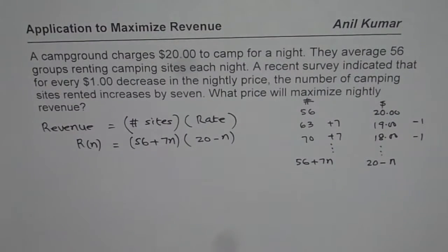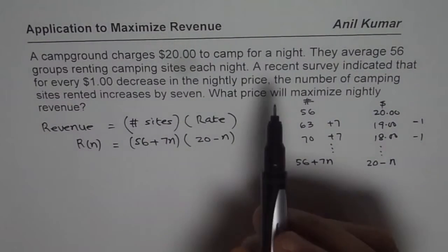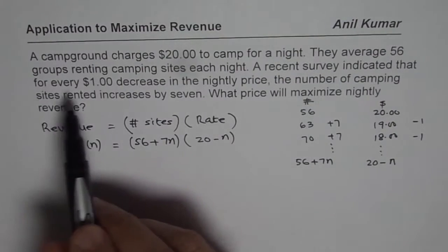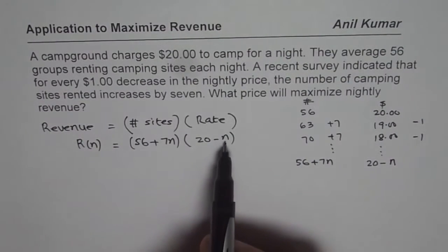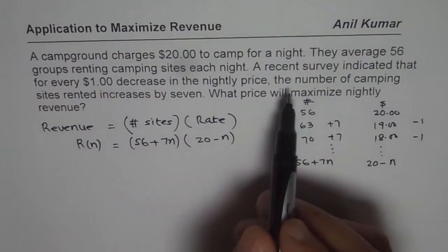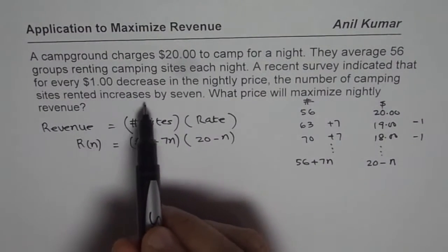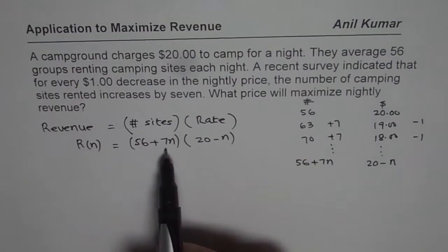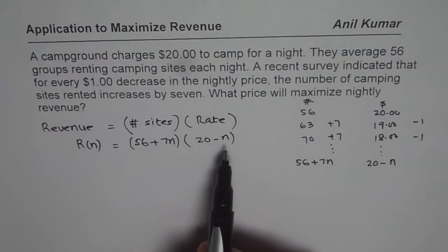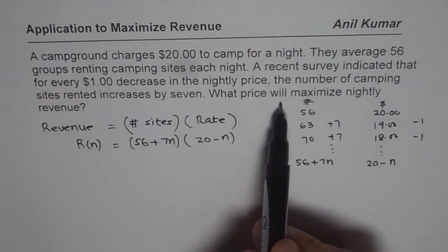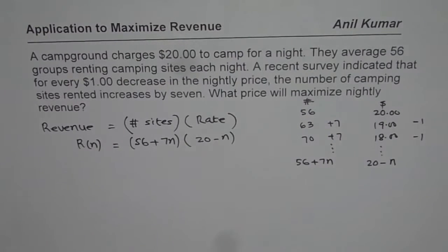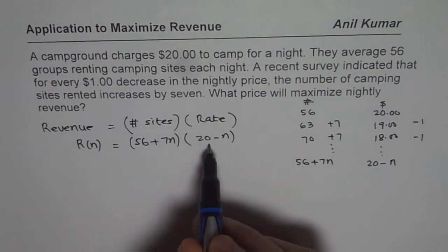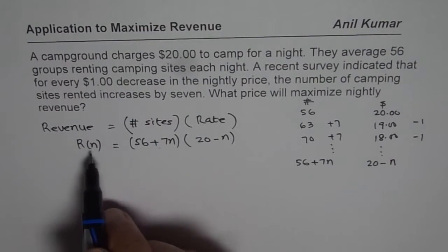So that is what you get as a relation. A recent survey indicated that for every dollar decrease in price, n dollars decrease results in the number of camping sites rented increasing by 7n. So the revenue function can be written as (56 + 7n)(20 − n). Now, to maximize this function, these two factors give us the two n-intercepts.